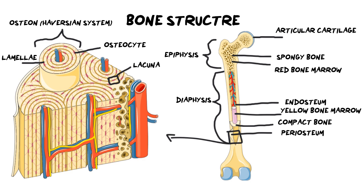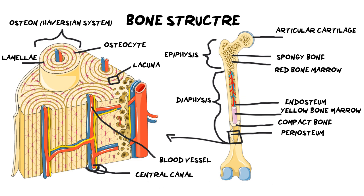Sitting at the center of each of our Osteons is a collection of blood vessels. Those blood vessels are there to bring nutrients and to help repair bone if it's broken. The blood vessels sit in a cylindrical space that runs down the middle of all of our Osteons, and we call that the central canal.